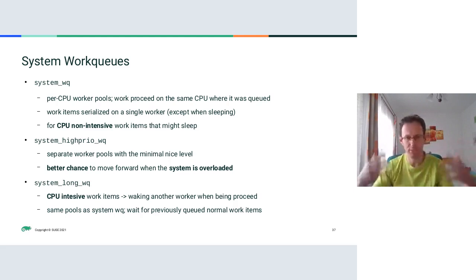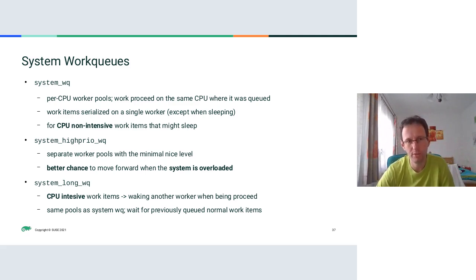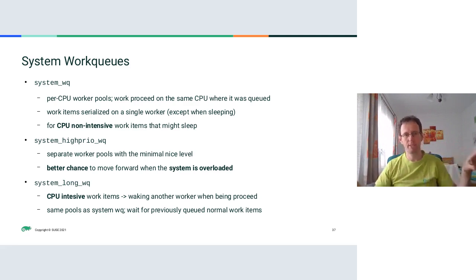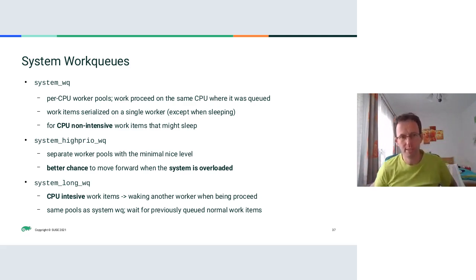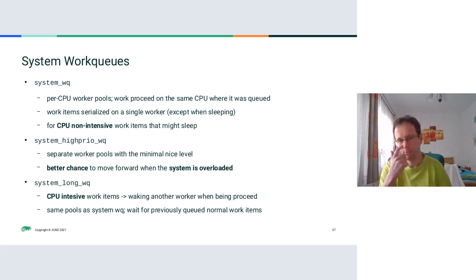There's one more thing to be careful about: work items for memory reclaim might depend on other work items — for example, some disk operations might have work items waiting for something else to finish. In this situation, you need to create a separate workqueue for each such item, because there is always only one rescuer per workqueue. If works depend on each other, you need as many rescuers as there are dependencies, to guarantee forward progress.